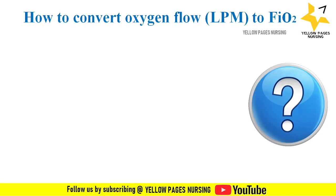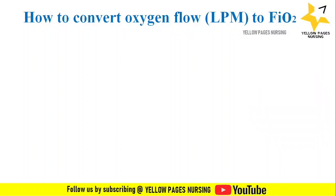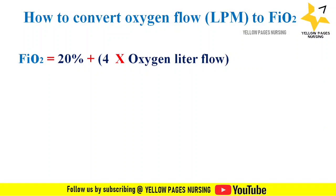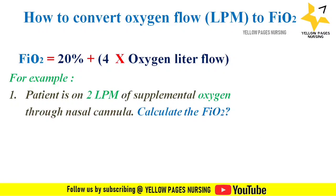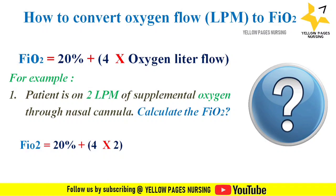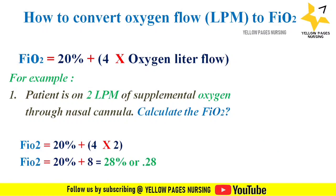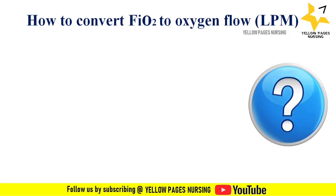How do we convert oxygen flow in liters per minute to FiO2? The formula is: FiO2 = 20% + (4 × oxygen liter flow). For example, a patient is on 2 liters per minute of supplemental oxygen through nasal cannula. Using the formula: FiO2 = 20% + (4 × 2) = 28%, or 0.28.